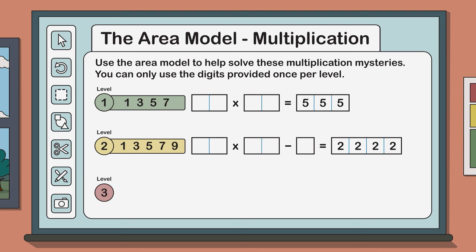And lastly, level 3. If you're feeling particularly ambitious. In this problem you can only use the digits 1, 3, 5, 7 and 9.